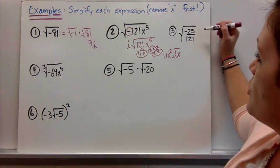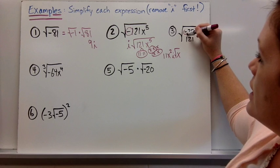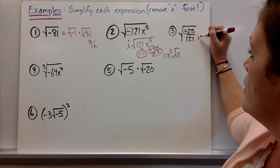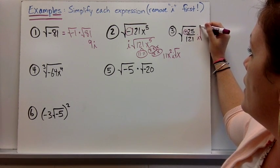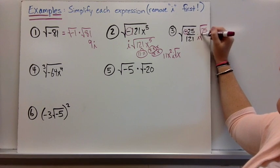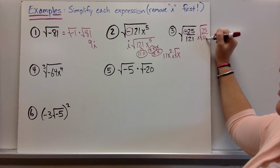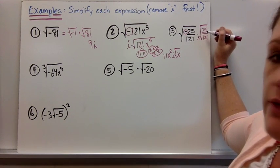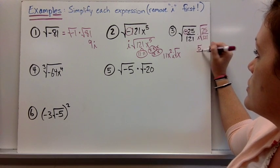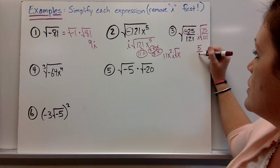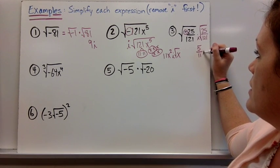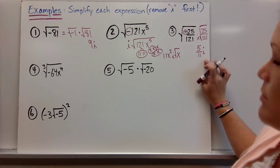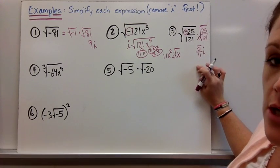For number three, the negative gives an i out front. Then we have the square root of 25 over 121, which comes out evenly. The square root of 25 is 5, and the square root of 121 is 11. Write the i after the coefficient — it's a coefficient — so the answer is (5/11)i.